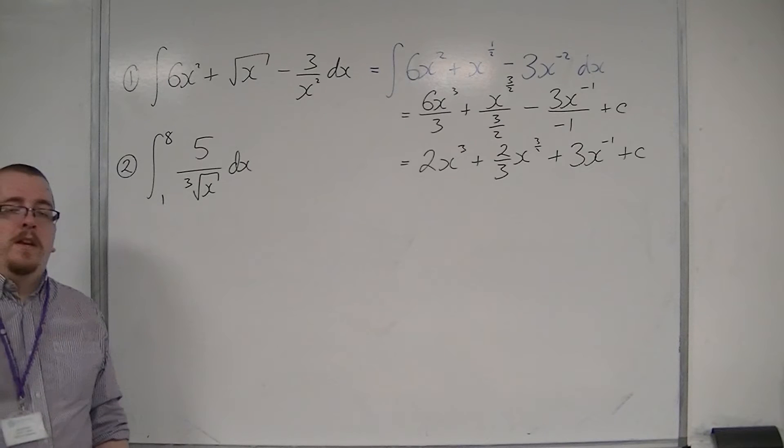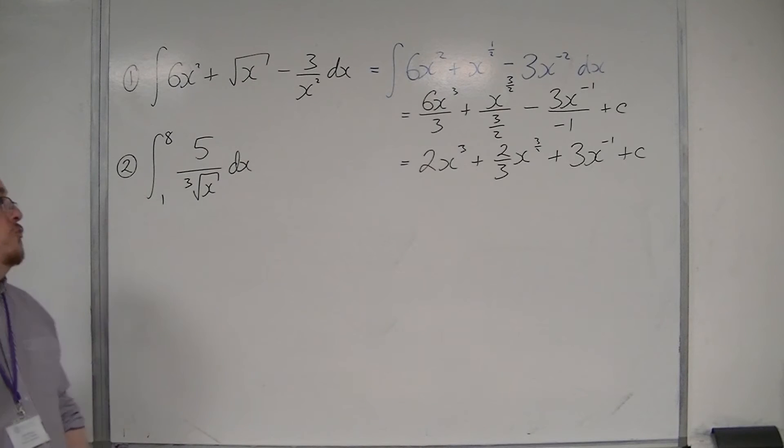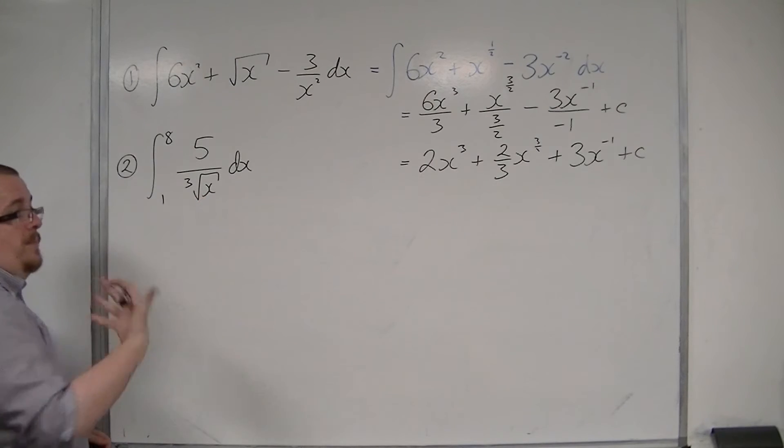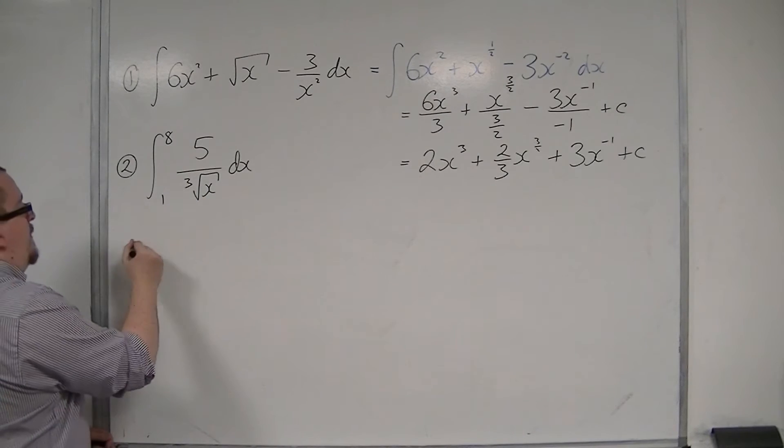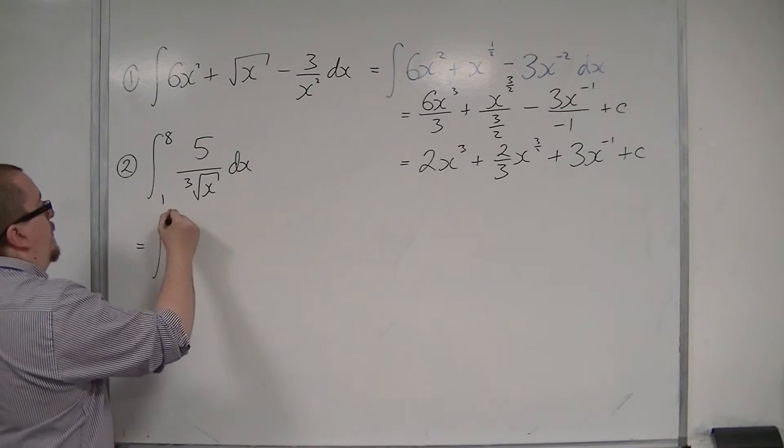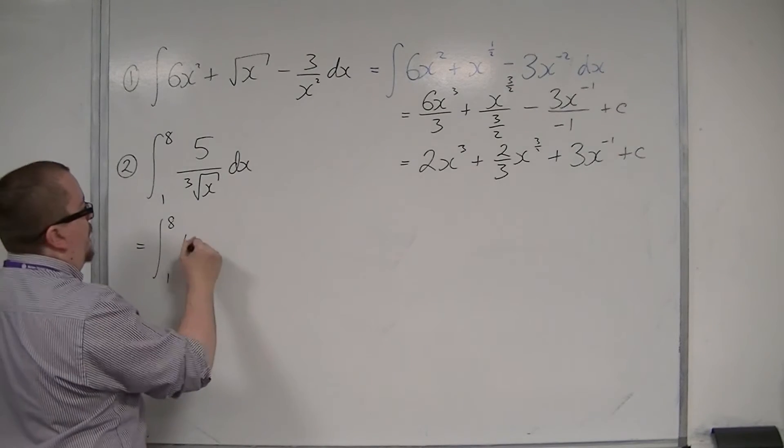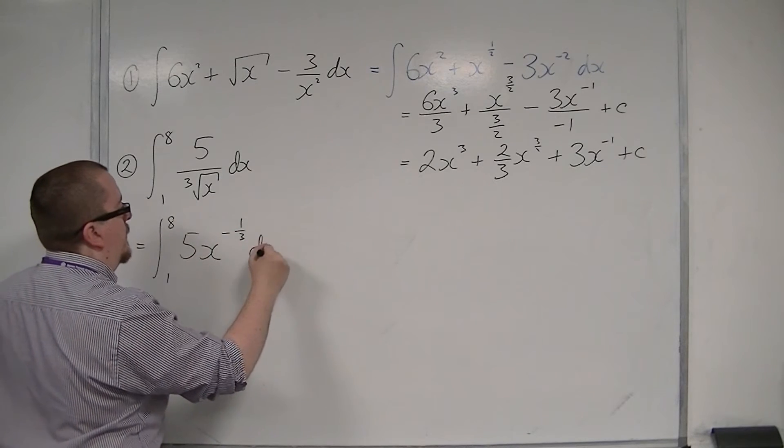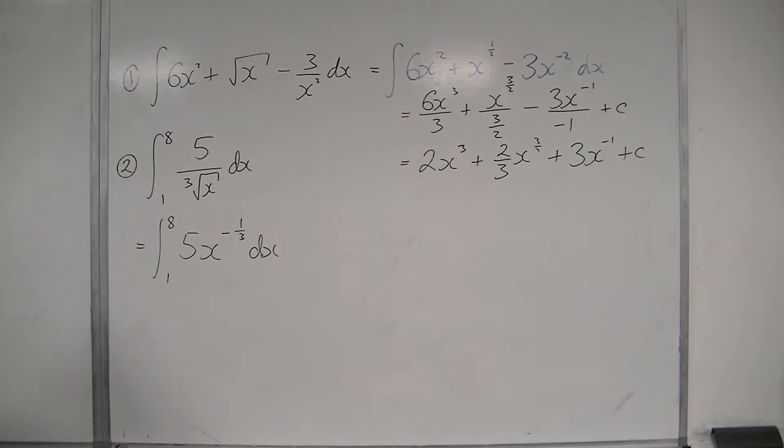Let's have a look at number 2, because we want to make sure we get our notation right as well. So the first thing to do is to rewrite this as x to the power of something. So this will be the integral between 1 and 8 of 5x to the power of minus 1 third. So that is 5 over cube root of x.